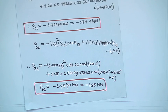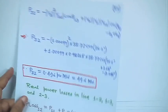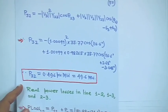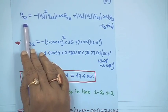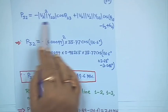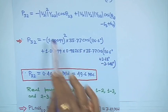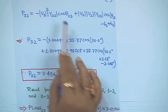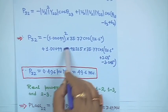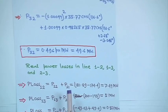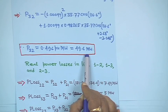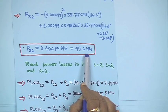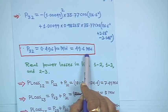Next, P₃₂ can be computed the same way using the same equation with k equal to 3 and i equal to 2. Expanding this and putting all values, you will get P₃₂ is equal to 49.6 megawatt. All these results are after the second iteration only.